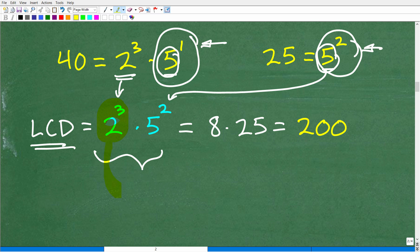So what is two cubed? Two cubed is the same thing as what? Two times two times two, that is eight. Five squared, of course, is five times five is 25. Eight times 25 is 200. So that is the LCD.